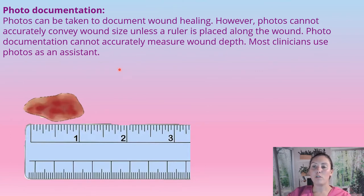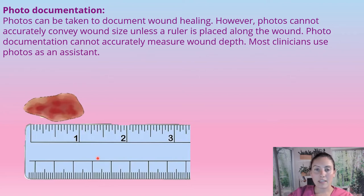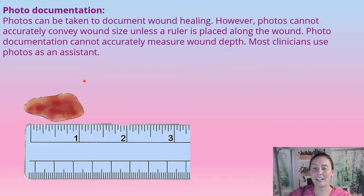Next we have photo documentation. Photos can be taken to document wound healing; however, photos are really difficult to accurately show the size of a wound unless you're placing a ruler. With zoom on cameras, you're never going to get it 100% perfect. It still isn't 100% accurate, but it will show over time that a wound is healing. Make sure you're also getting consent before taking any pictures. Most of the time, this is used to assist measurements — we're not using this alone.